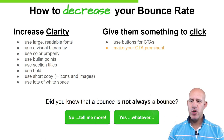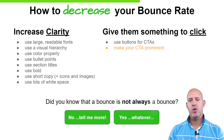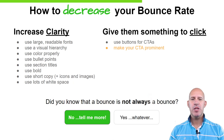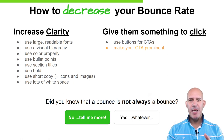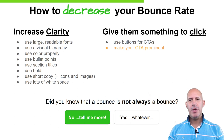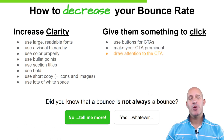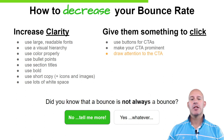Next point: make your call to action prominent. Here I have two buttons, but I really want them to click the one on the left — 'Tell me more.' What I do is make one of the buttons more prominent visually so that people are most likely to click it.